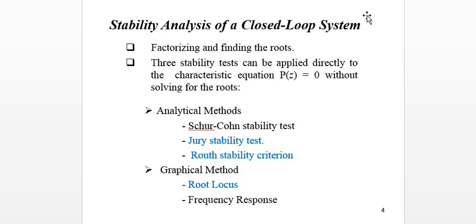To check the stability of a closed-loop system, there are two main steps. First, factorize and find the roots from the characteristic equation. Second, without solving the roots, we can use analytical or graphical methods. In this chapter, for the analytical method we focus on Jury Stability, and for the graphical method we focus on Root Locus.